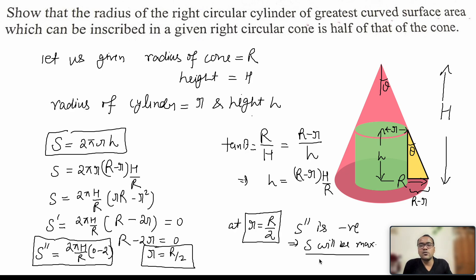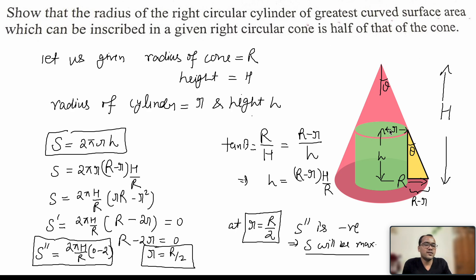Hence it is proved that when small r equals capital R upon 2, the surface area of the cylinder is maximum. That is what we had to prove — the radius of the right circular cylinder of greatest curved surface area equals half of that of the cone. I hope this question is clear to all of you. Thank you for watching the video. All the very best.